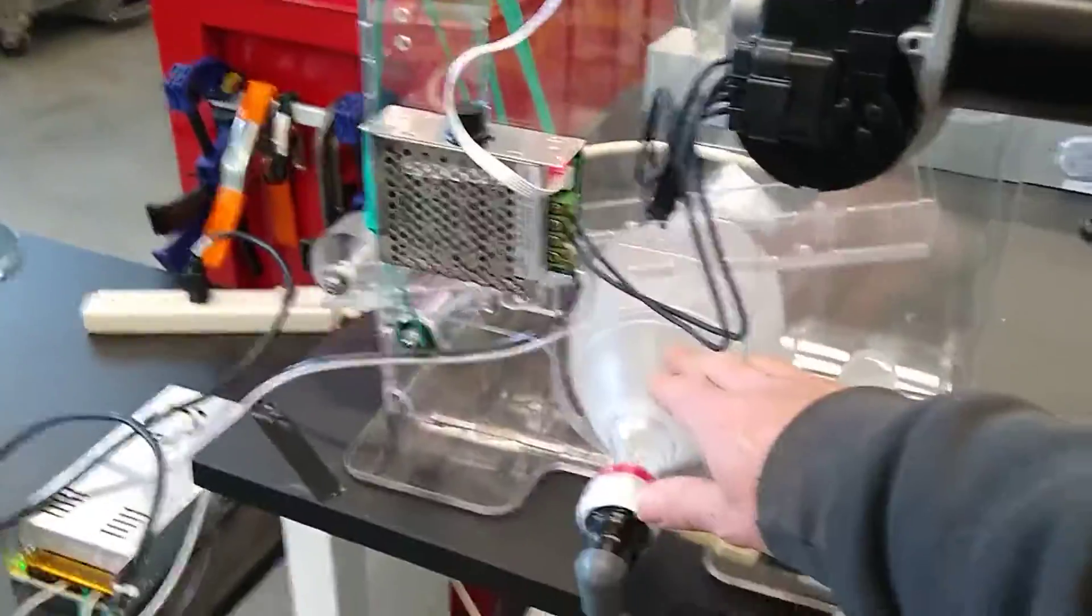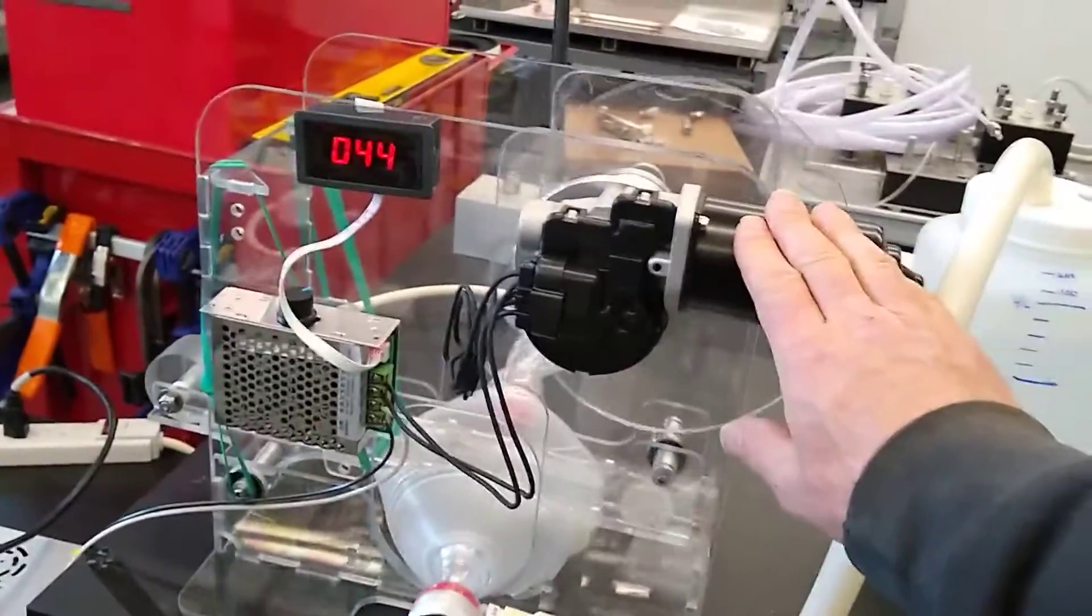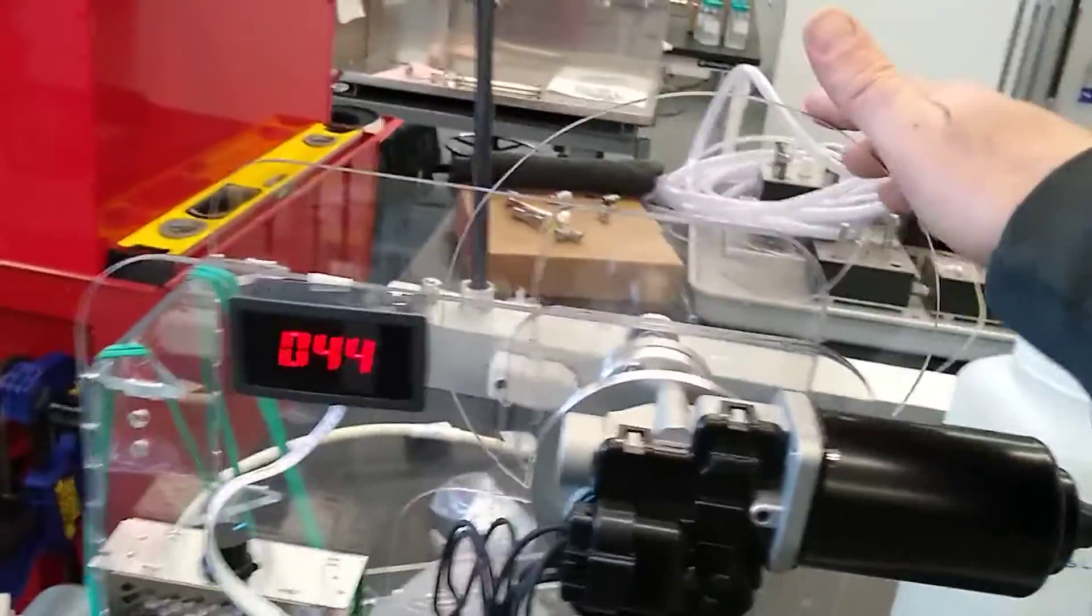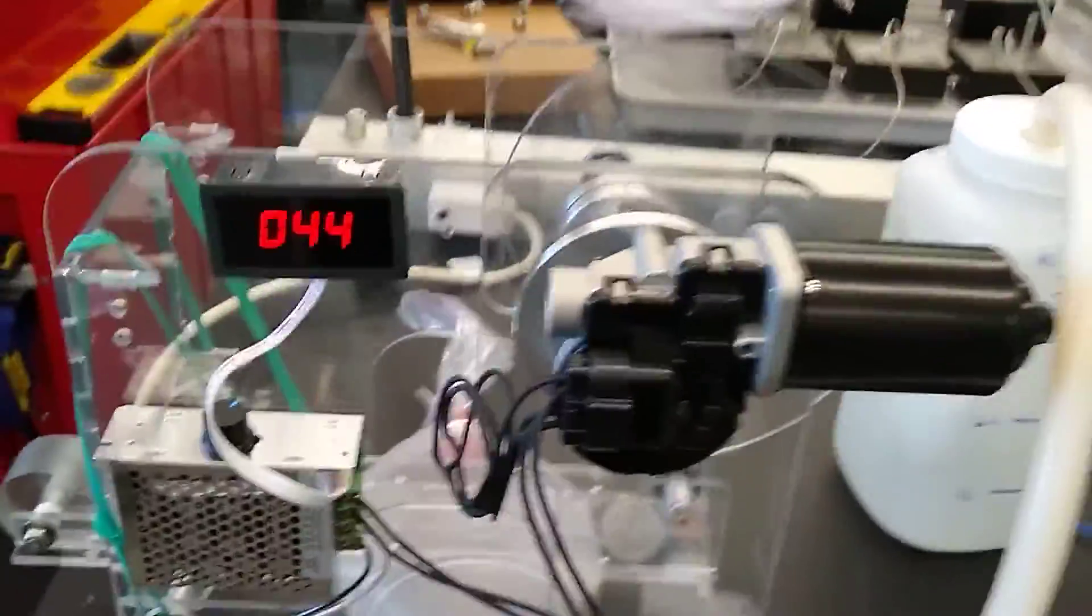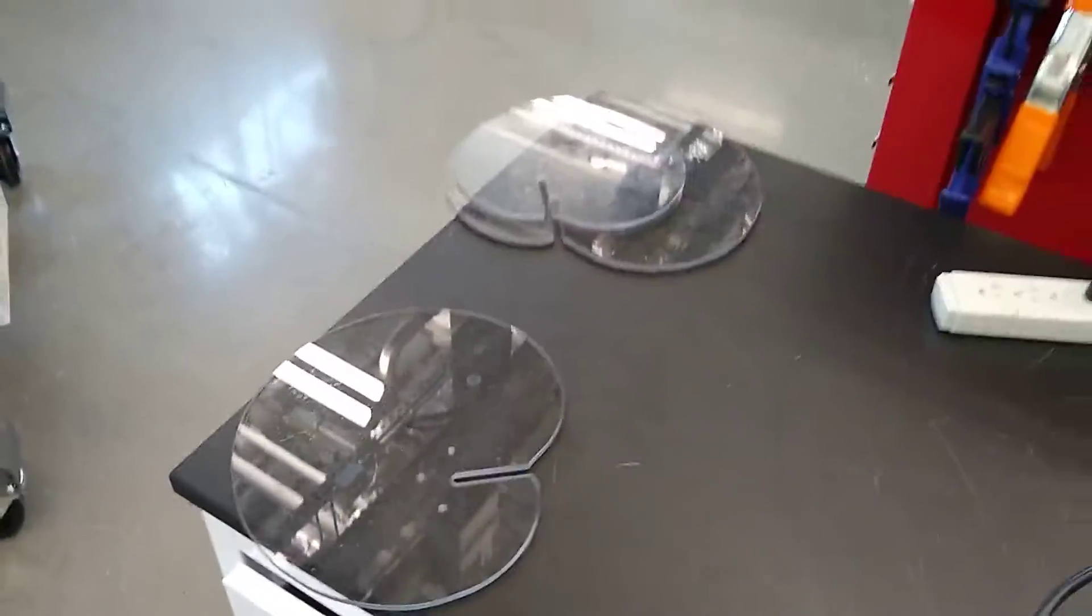What this device does is it squishes an Ambu bag, and this is a wiper motor. The wiper motor is being used to turn a cam, and we have various sized cams for various tidal volumes. Here are three other cams.